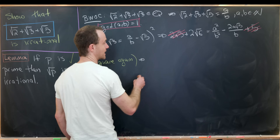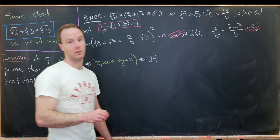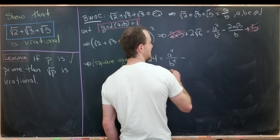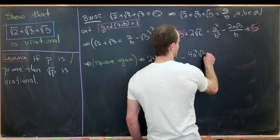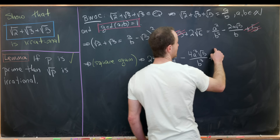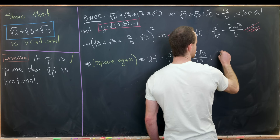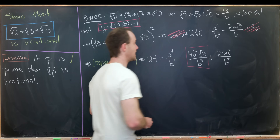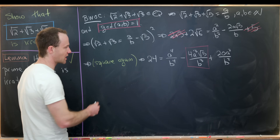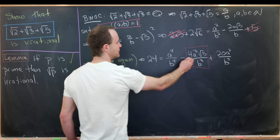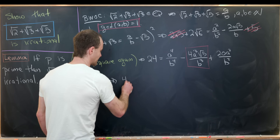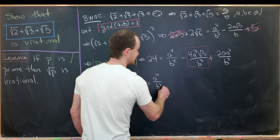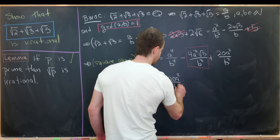Squaring again, we get 4 times 6, which is 24 on the left. On the right we'll have a to the fourth over b to the fourth, minus 4a cubed times the square root of 5 over b cubed, plus 20a squared over b squared. Now we can use this equation to solve for the square root of 5 in terms of rational numbers. Moving terms around, we get 4a cubed times root 5 over b cubed equals a to the fourth over b to the fourth plus 20a squared over b squared minus 24.